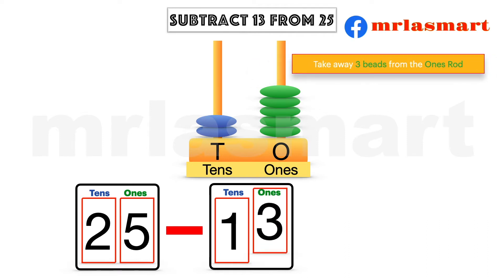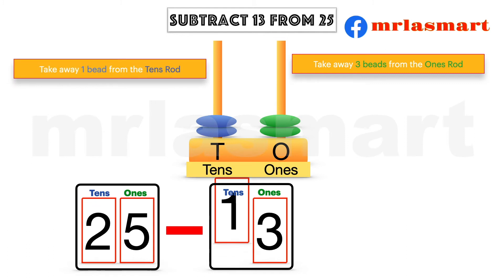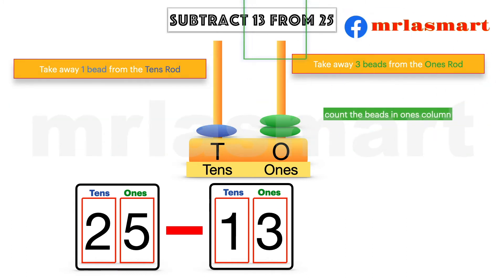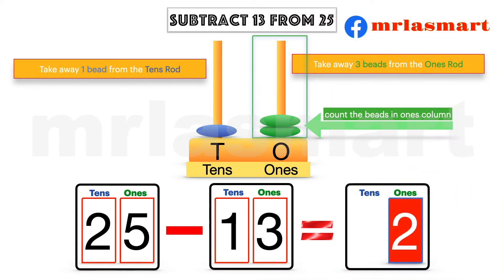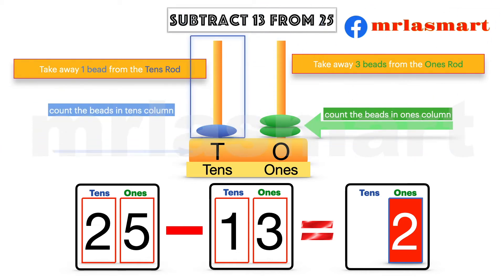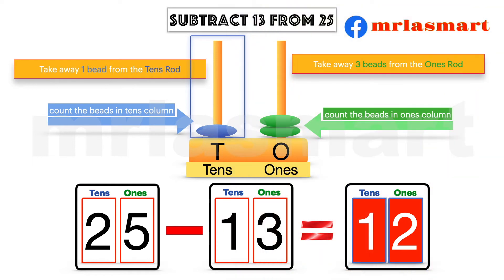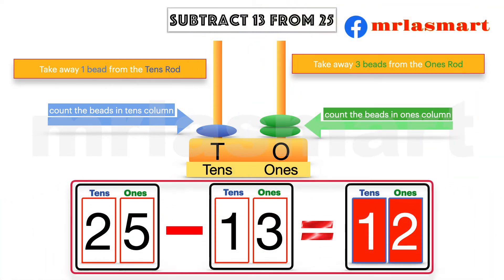Subtract 13 from 25. Take away three beads from the ones rod. Take away one bead from the tens rod. Count the beads in the ones column. Count the beads in the tens column. Hence, 25 minus 13 equals 12.